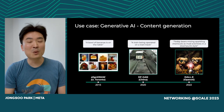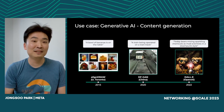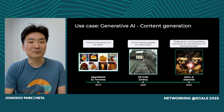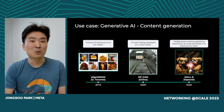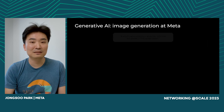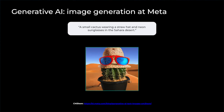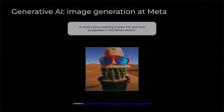One of the important enabling technologies from 2015 until now is a huge amount of compute capability available, and the network technologies that connect many accelerators have played a very important role. Meta has contributed to this field significantly. For example, this year's work shows that by giving a prompt of a small cactus wearing sunglasses in the Sahara desert, we can see a very convincing, photorealistic image compared to images shown previously.